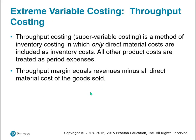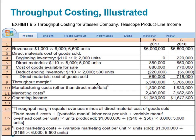Throughput costing is sometimes called super variable costing. Only direct material costs are included as inventory costs on the balance sheet; all other product costs are treated as period expenses and expensed. Some managers believe that even variable costing promotes an excessive amount of costs being inventoried. The throughput margin is revenue minus all direct material costs of goods sold. Revenues minus direct material costs of goods sold yields the throughput margin, then other manufacturing costs and marketing costs are deducted to get operating income.